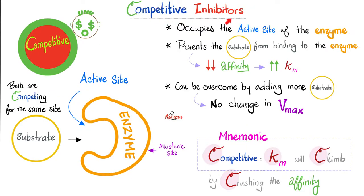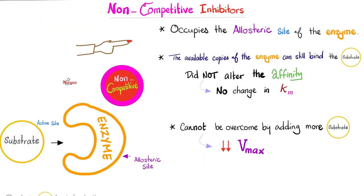Moreover, competitive inhibitors are the only inhibitors that do not lower the Vmax, which is the maximum rate of the reaction. Every other inhibitor will decrease your Vmax. Let's review competitive inhibitors quickly. They crush the affinity. And as you know, affinity is always opposite to Km. By crushing the affinity, Km will go up.